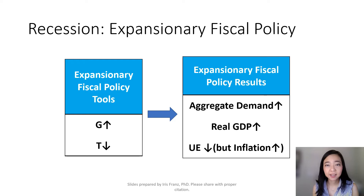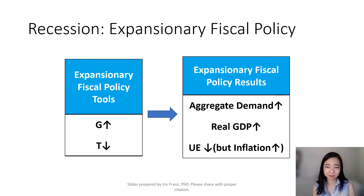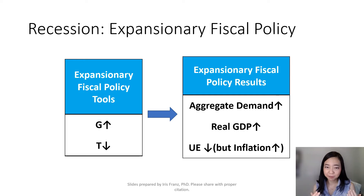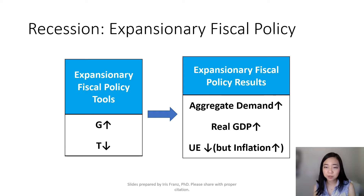The government can reduce the severity or the duration of a recession by using expansionary fiscal policy. There are two tools that government can use: one is to increase government spending, the other one is to reduce the tax. Both of these will increase aggregate demand and thus raise the real GDP. As a result, unemployment rate is going to go down, but the side effect is that the inflation rate is going to go up.